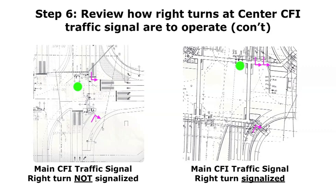The one on the right shows a case where it was signalized by the designer. Here, that right turn movement is going to see a signal display — even though the signal display is going to be right on top of the stop line almost — so they can't go at the same time as the advanced left turn movements from the advanced CFI traffic signal, in this case the southbound left turn arrows.